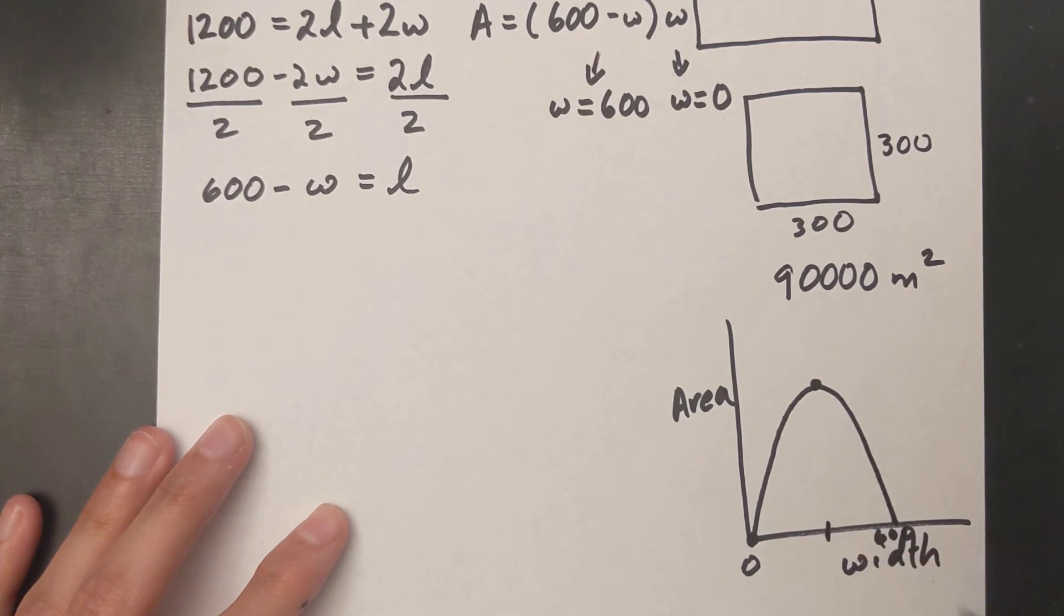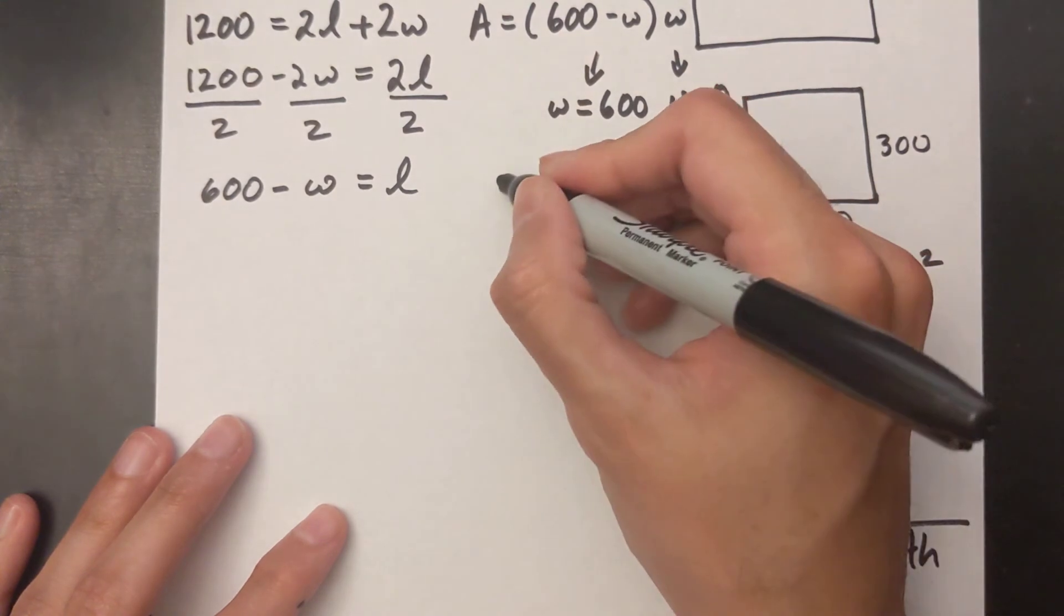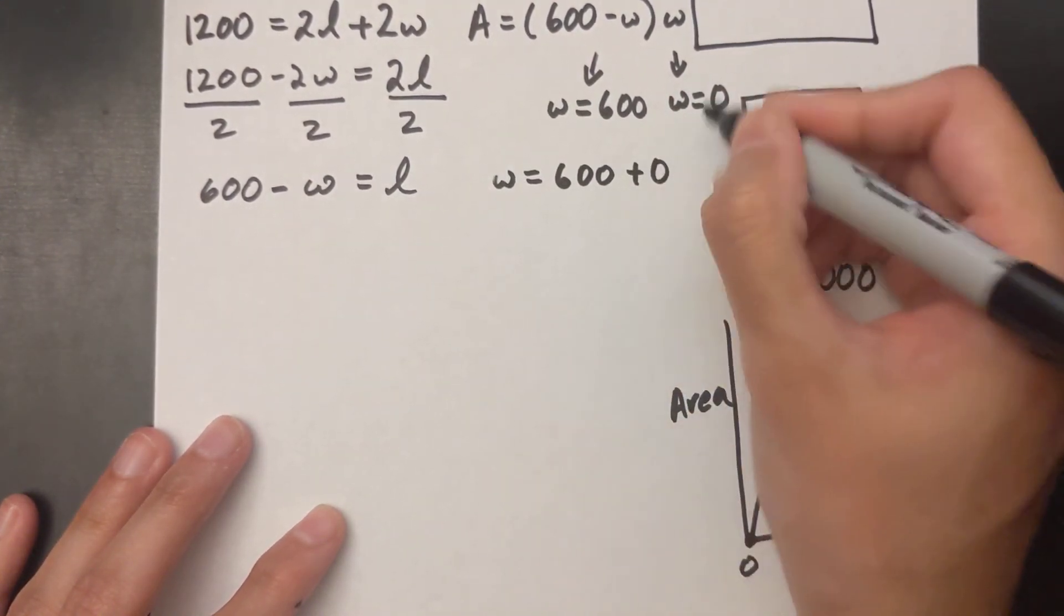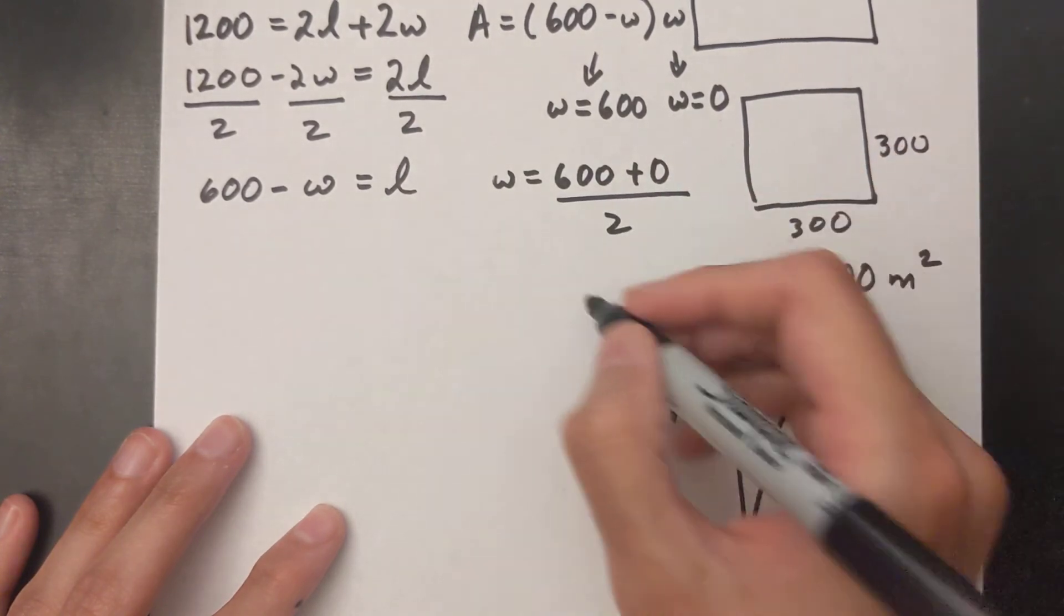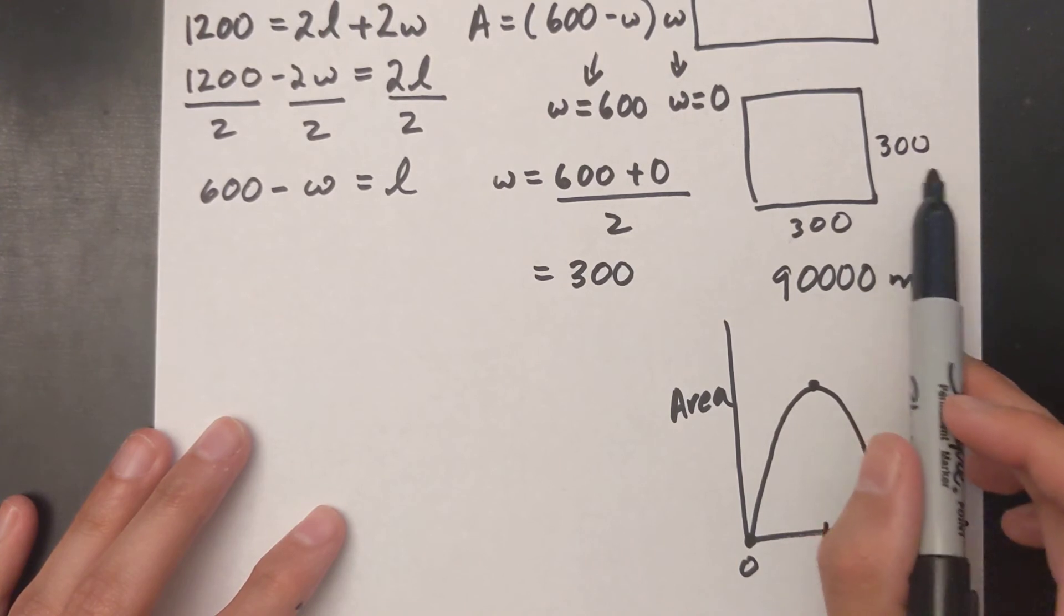The x value of my vertex is just the midpoint here. So my x value of my W is 600 plus 0, my 2 x-intercepts, divided by 2, which is 300. And as you can see it's the same as what I showed in the square.